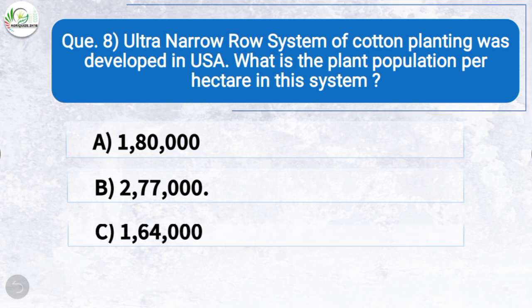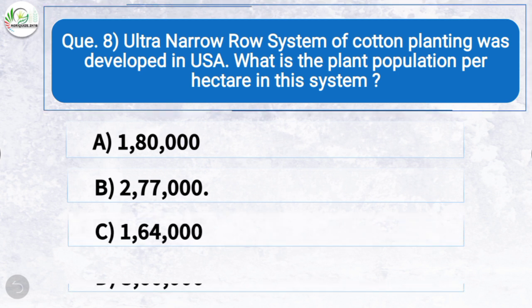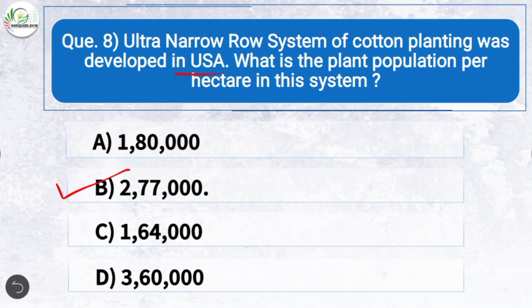Question eight: Ultra narrow row system of cotton planting was developed in USA. What is the plant population per hectare in this system? The correct answer is option B: 2 lakh 77 thousand. The plant population per hectare in the ultra narrow row system of cotton planting developed in USA is around 2,77,000.